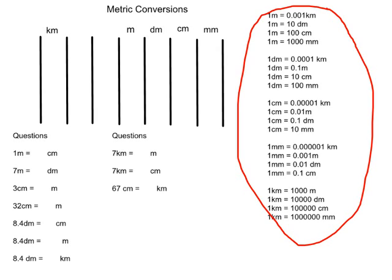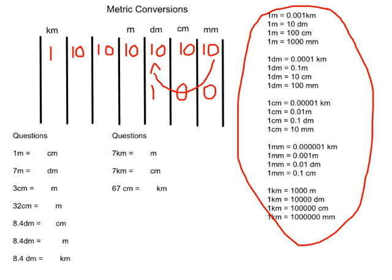It takes 10 millimeters to make 1 centimeter, 10 centimeters to make 1 decimeter, 10 decimeters to make 1 meter, 10 meters to make 1 decameter, 10 decameters to make 1 hectometer, and 10 hectometers to make 1 kilometer. So it's always the power of 10 between each unit. If we need to go between two units — say millimeters to decimeters — we multiply by 10 twice: 10 times 10 equals 100, so it takes 100 millimeters to make 1 decimeter.